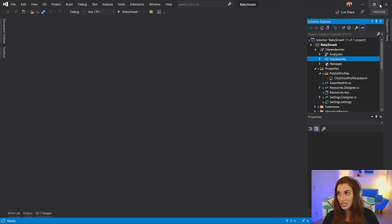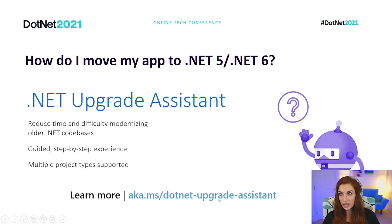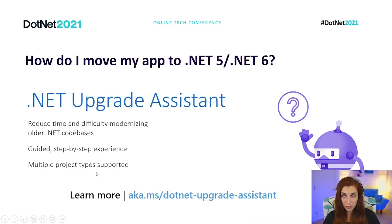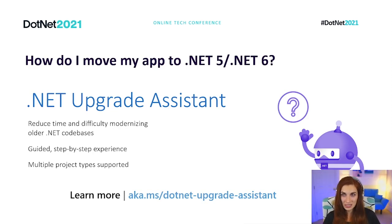That was me porting an application from .NET Framework to .NET 5. I was very lucky and Upgrade Assistant did all the work for me. You can find Upgrade Assistant at aka.ms/dotnet-upgrade-assistant. It will help you reduce time and difficulty modernizing older code bases. It guides you through a step-by-step experience where you make choices only where needed, but everything else is done for you. It works with multiple project types and will update many projects if your solution contains more than one. If you port your apps right now to .NET 5, it will be extremely easy to update to .NET 6 — just changing the version in the combo box.